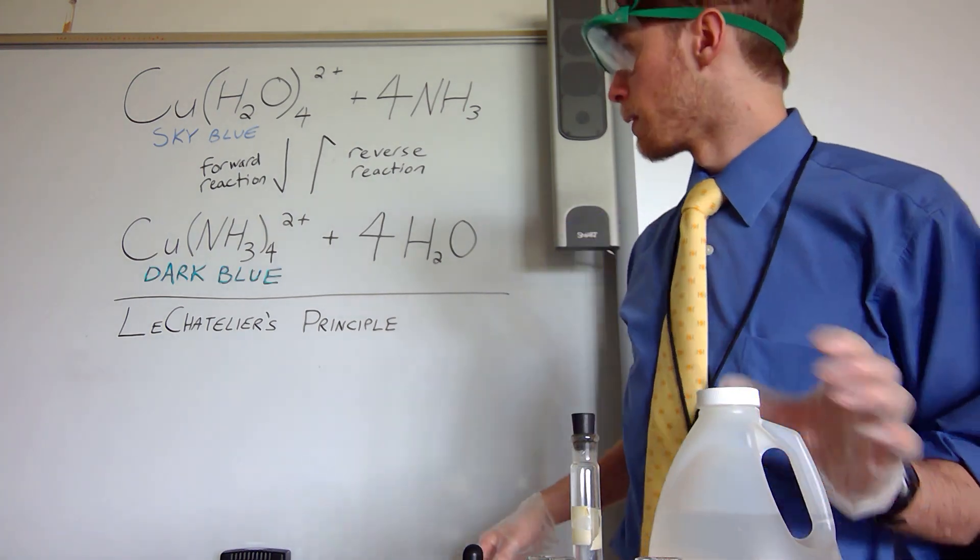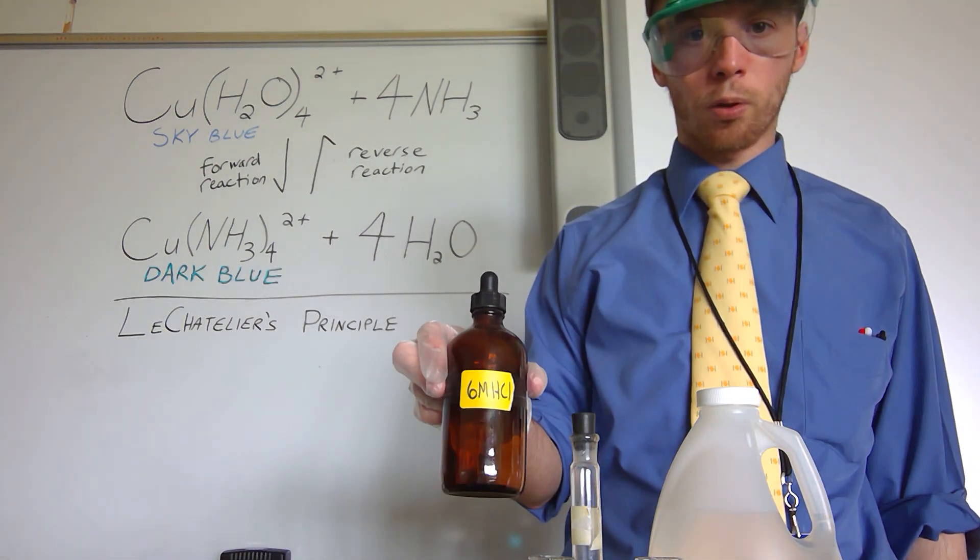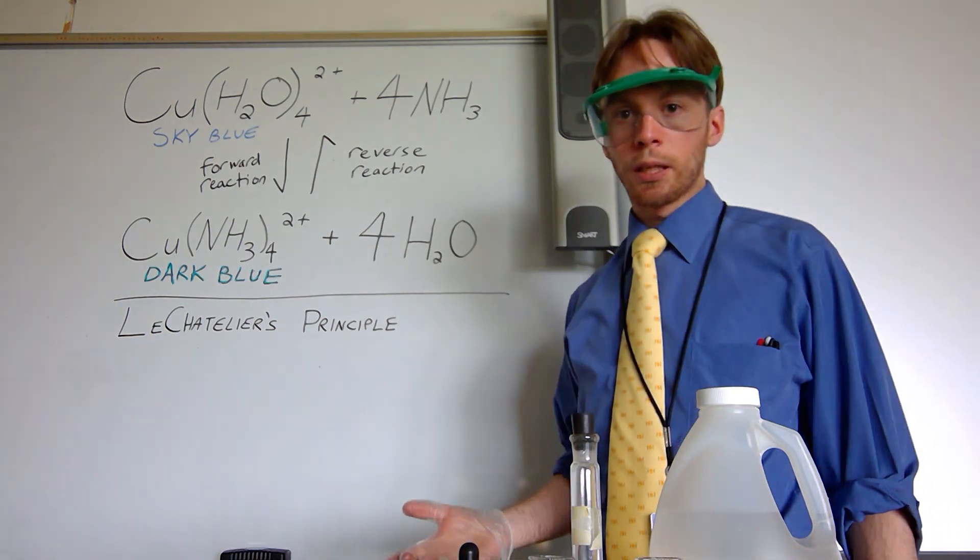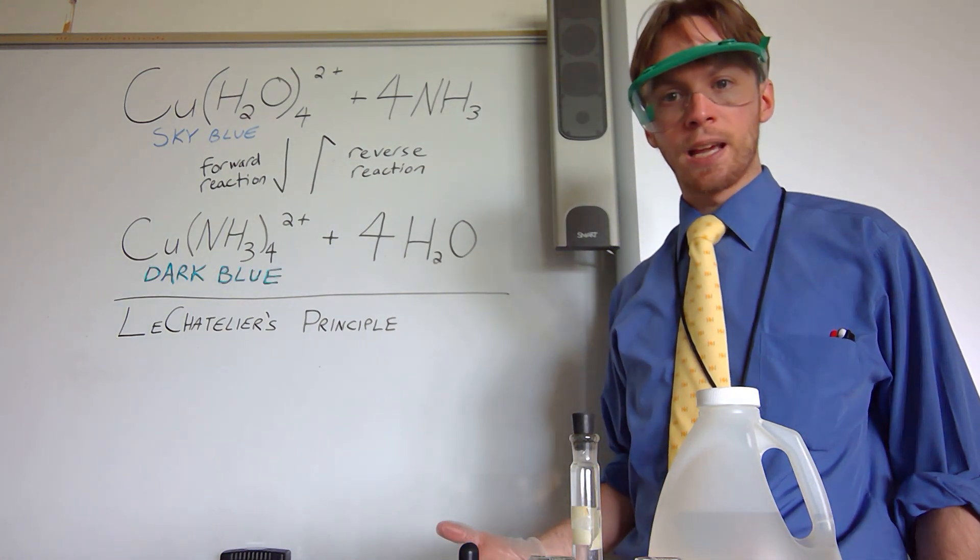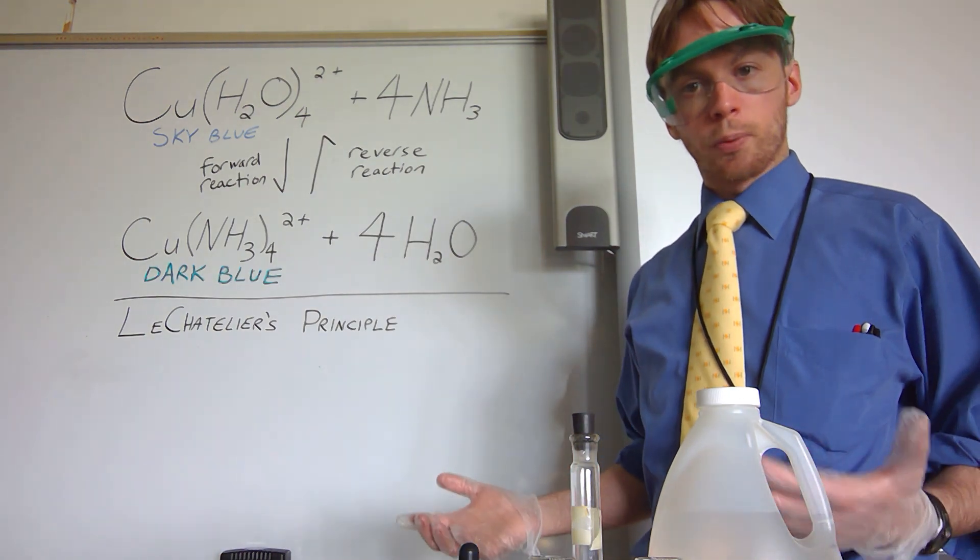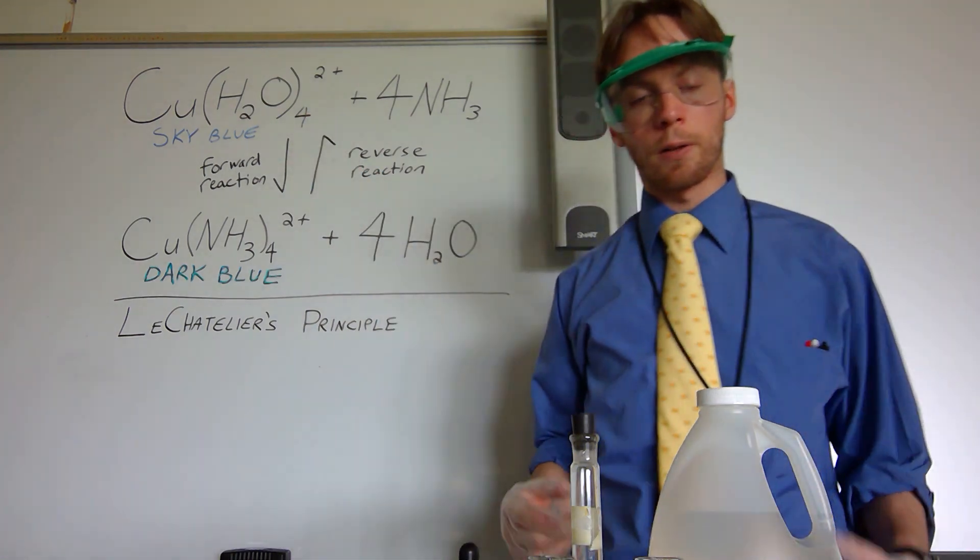And push the reaction towards the products, and then what I'm going to do is react it with six molar hydrochloric acid. What that'll do is that will react with the residual ammonia in the solution and make an ammonium ion. The ammonium ion can't form a complex with copper like ammonia can, and so as a result we'll turn back to this nice sky blue color.